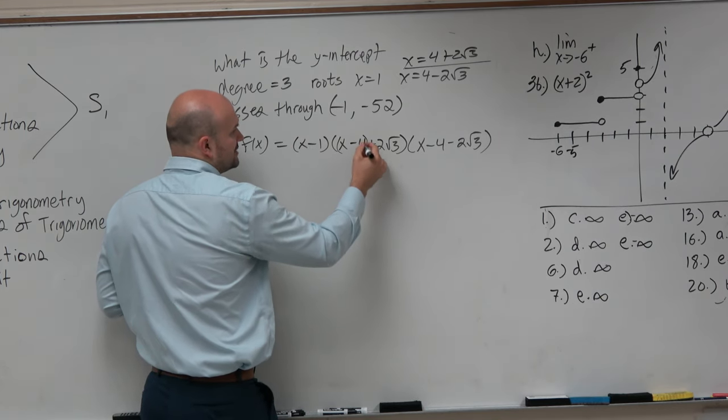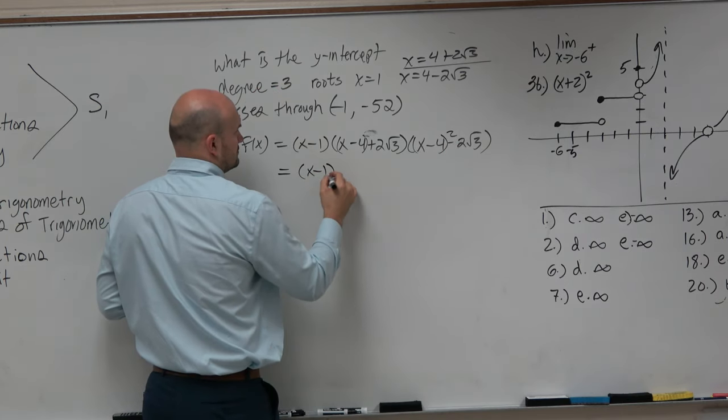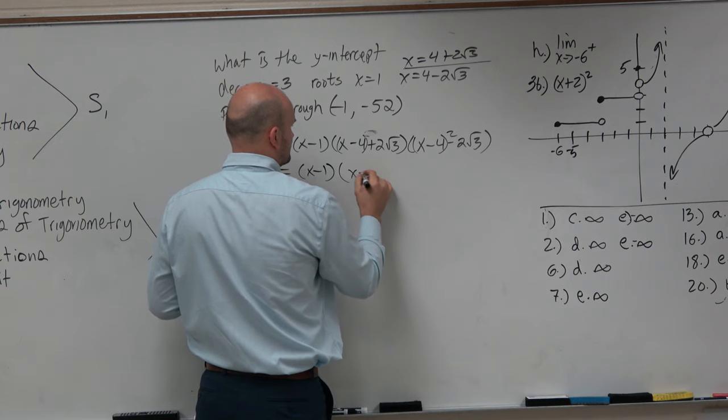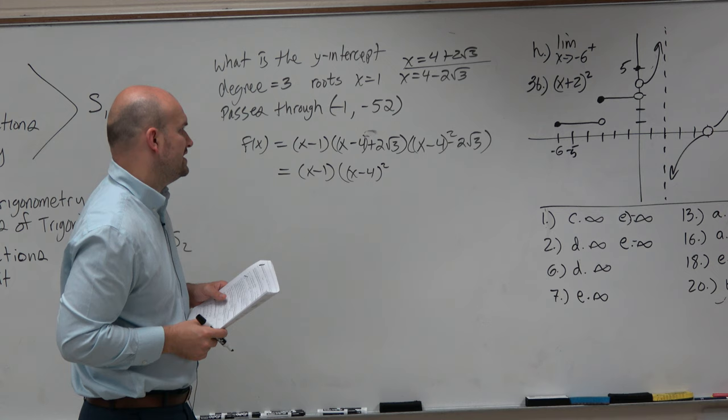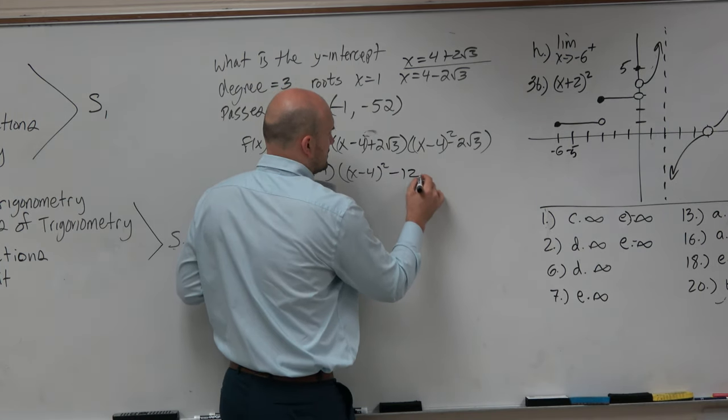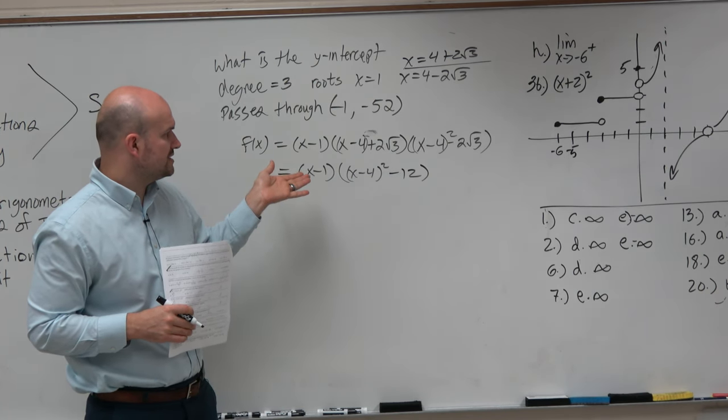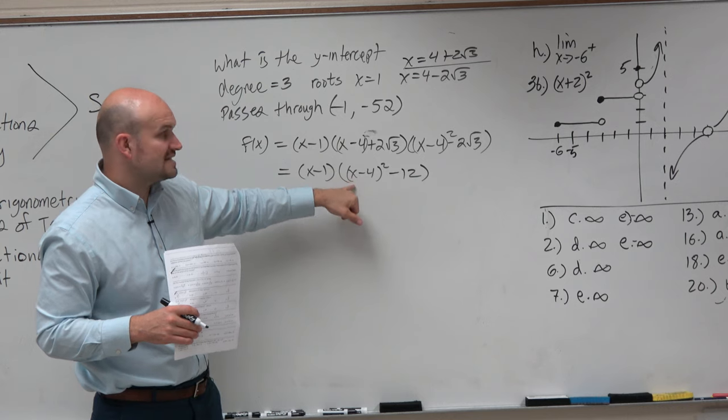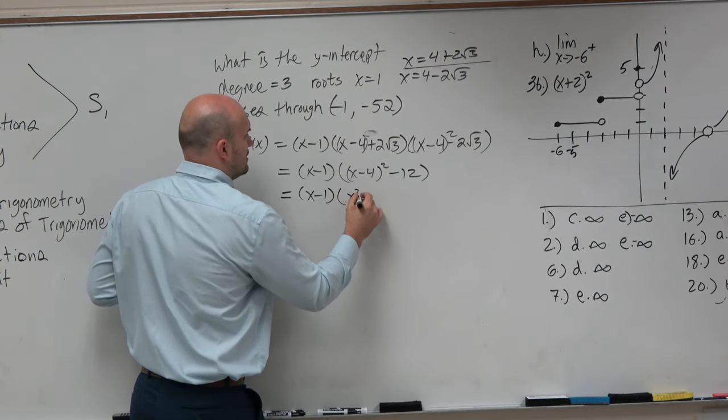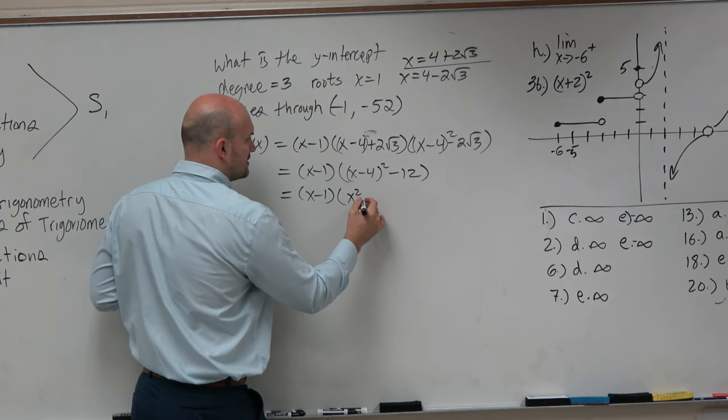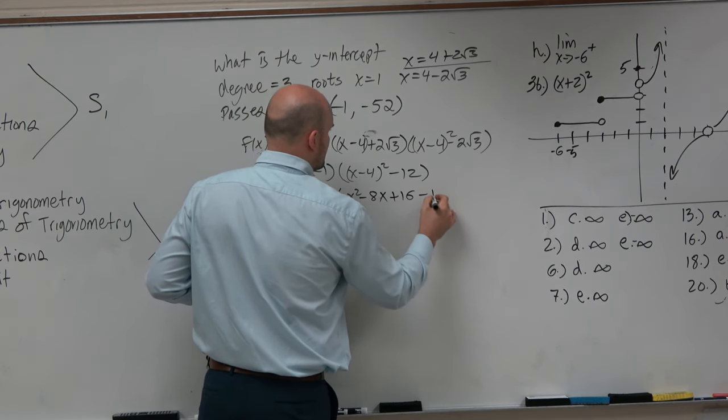Now from here, I'm going to do my shortcuts. I'm going to group the first two terms. This is going to give us 3 times 4, which would be 12. 2 times 2 square root of 3 times 2 square root of 3 is going to be 4 times 3, which is 12. And that's a minus. That's x minus 4 squared, which I can simplify to x minus 1 times x squared minus 8x plus 16 minus 12.